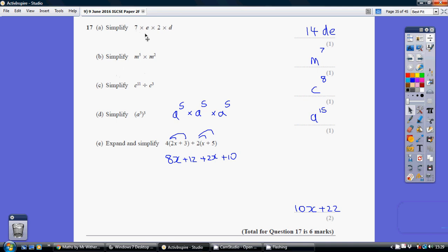So what can we do with part a? Well, we can't do anything with the d and the e other than just put them in alphabetical order, but we can do seven twos or 14, so it's 14 times d times e, which is 14de.